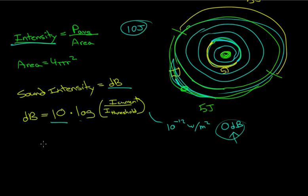The threshold of hearing is usually referred to as I0, and that of course equals, like I said, 10 to the negative 12 watts per meter squared.